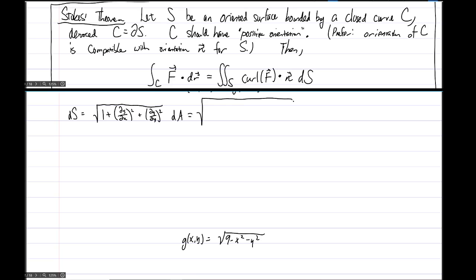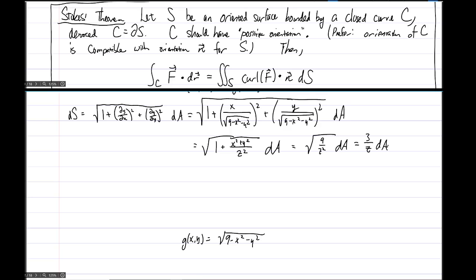Similarly, we're going to have root, well, the 1 plus, and then if we differentiate that with respect to x due to chain rule, we're going to have x over root 9 minus x squared minus y squared quantity squared plus, similarly, y over root 9 minus x squared minus y squared quantity squared dA. And then, cleaning up some of the algebra here, we'll end up with 1 plus the fraction x squared plus y squared over z squared, at least for now, a shortcut way of writing this dA, which will equal root 9 over z squared dA, which will be 3 over z dA. Of course, our z is just a shortcut for writing this for right now.